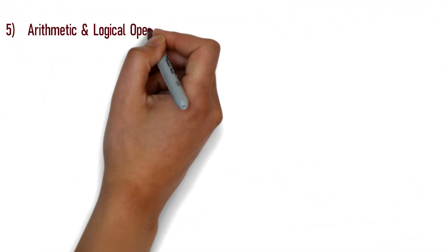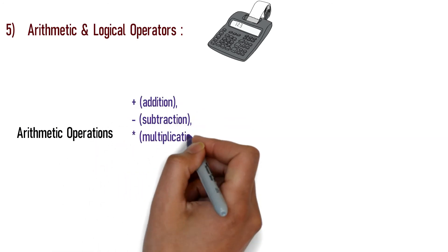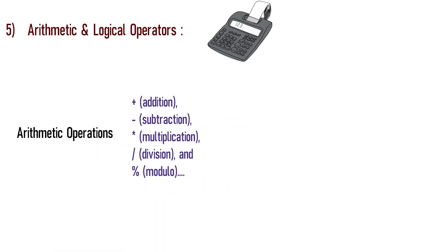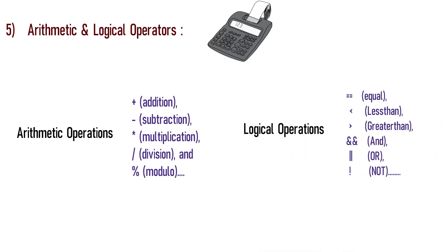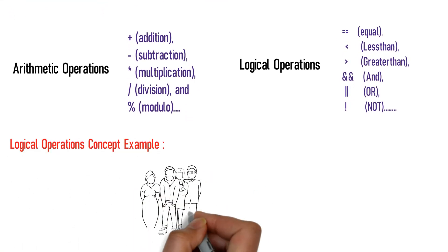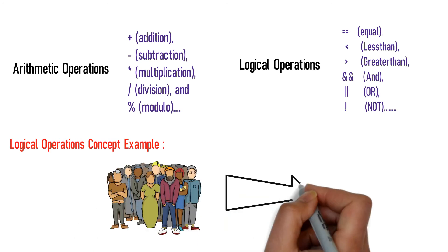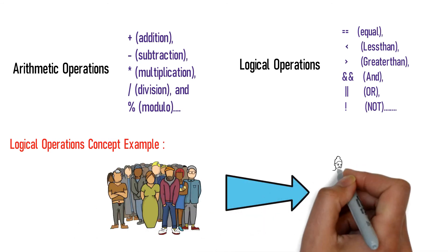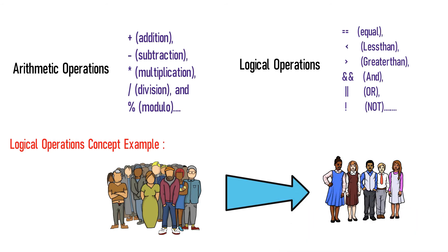Next is Arithmetic and Logical Operators. Arithmetic operators perform calculations. Logical operators allow you to compare two values — for example, greater than or less than. If there is a list of 10 names, you can compare them with each other. This comparison is called a logical operator.